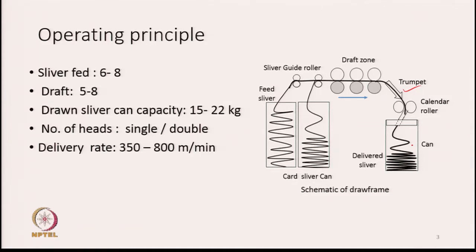The output sliver is then packed in another can. The feed cans are much larger in size in modern machines and the delivered cans are a little smaller. Delivered cans from draw frames generally have a capacity of 15 to 22 kg, or a maximum of up to 25 kg of material inside the can. The delivery rate of the machine can vary between 350 to 800 meters per minute, depending upon the manufacturer and the type of fiber being processed.